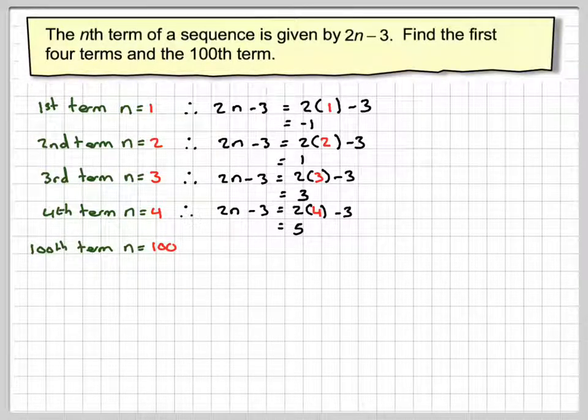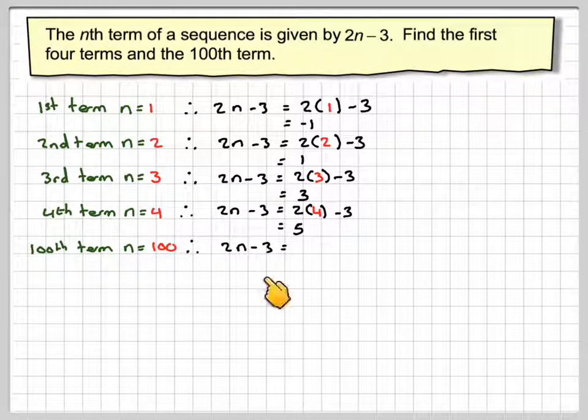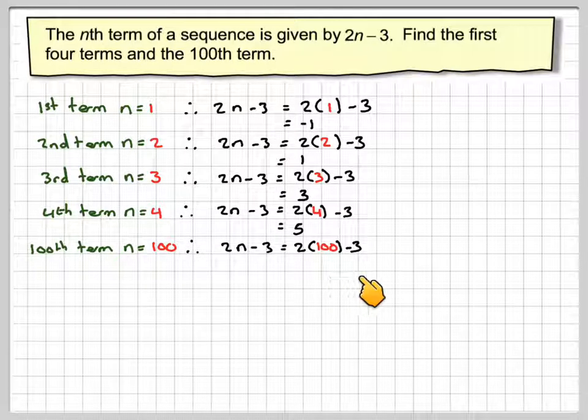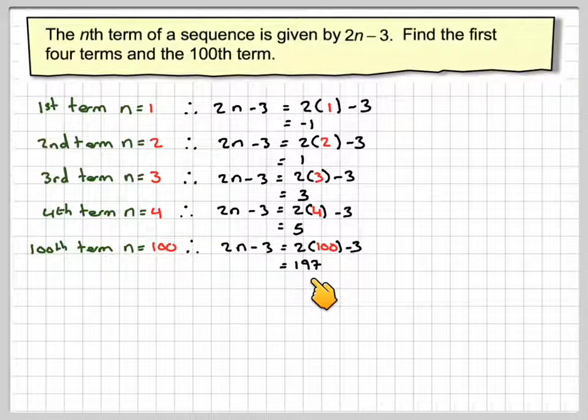Therefore, to find the hundredth term, we put n equal to 100. 2n minus 3 will become 2 times 100 take away 3. 200 take away 3 is 197.